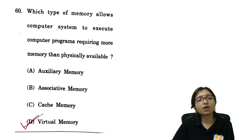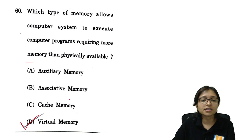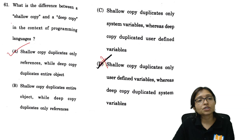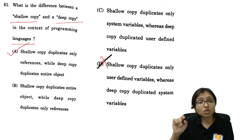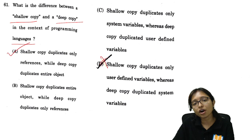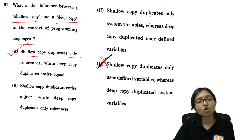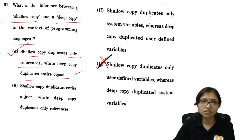Next: the type of memory that allows a computer to execute programs requiring more memory than the physical memory is obviously virtual memory. Next: the difference between shallow copy and deep copy — shallow copy duplicates only the reference, while deep copy duplicates the entire object. If you chose otherwise, that is not the correct answer.